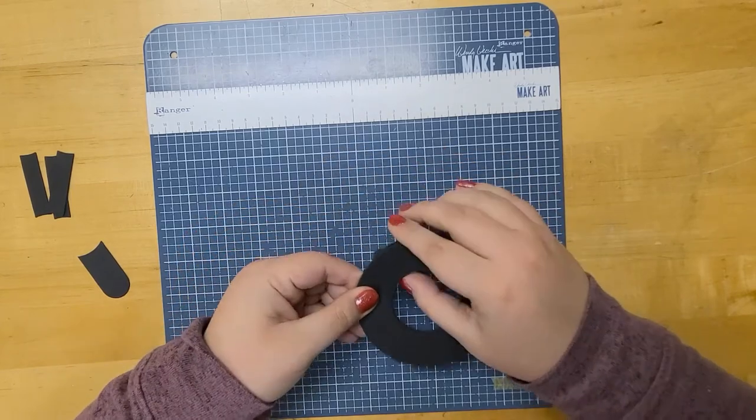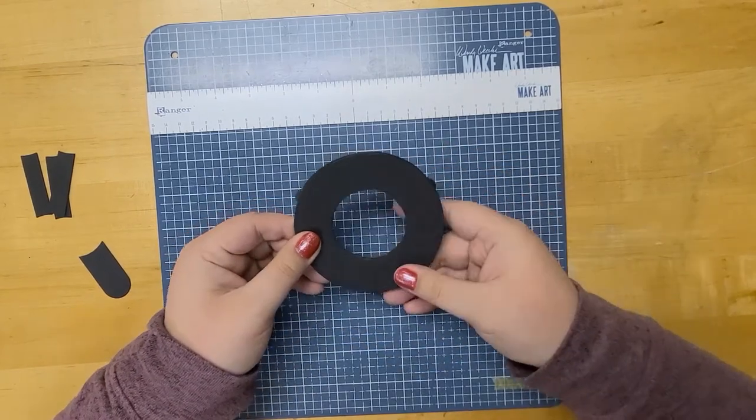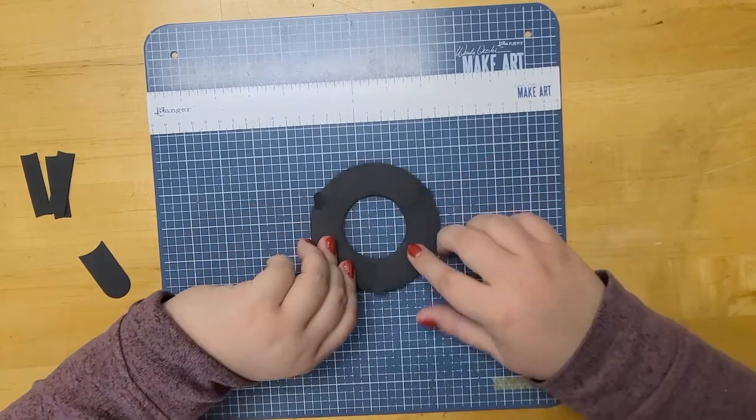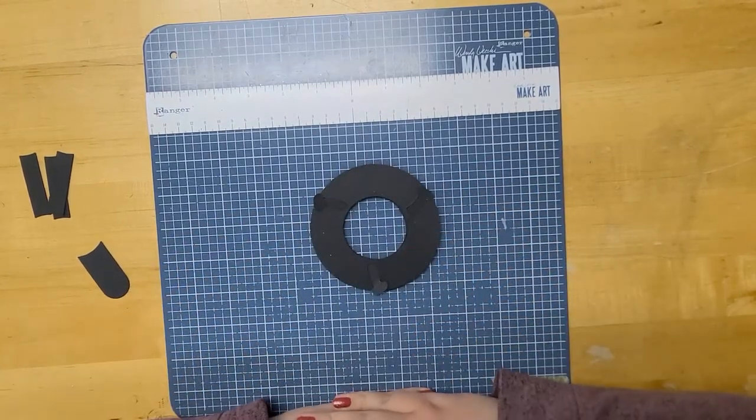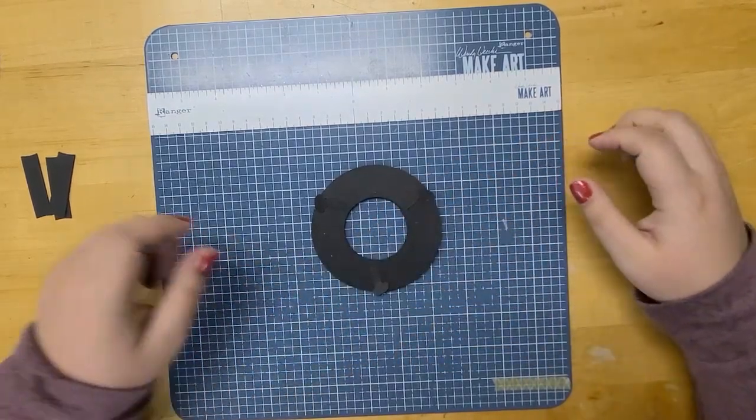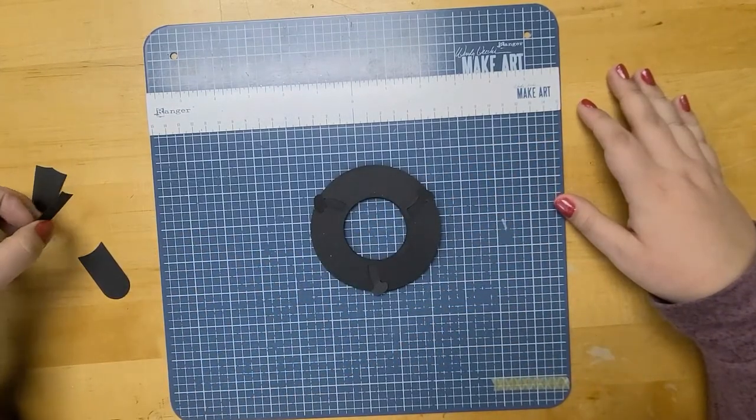So now you should have something that looks like this. Don't worry about these little tabs, we'll get around to hiding them later. So now you're going to flip this over, and this is where you're going to want to look for those guides that were die cut.